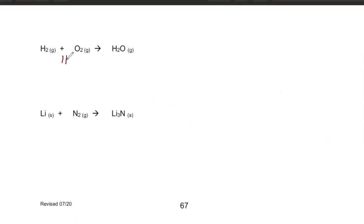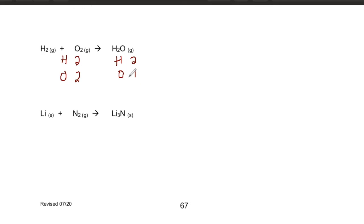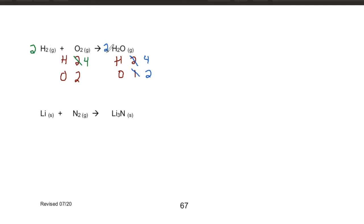For hydrogen and oxygen: we have two hydrogen and two oxygen on the left, but two hydrogen and one oxygen on the right, so we need more oxygen on the right. The only way to increase oxygen is to increase the number of water molecules — make two of them. That brings oxygen to two but now we need more hydrogen on the left, so we put a coefficient of 2 in front of H₂, bringing it to four. Once we change the coefficients, the equation is balanced.